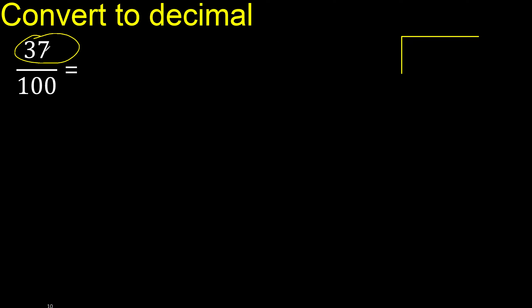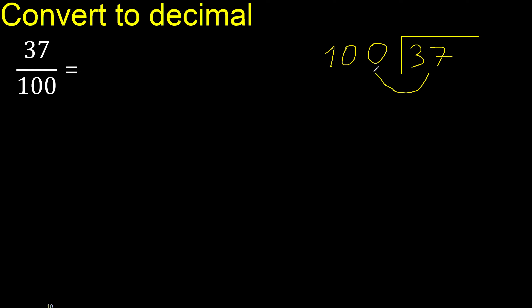37 divided by 100. 37 is less than 100. Therefore complete — always complete with 0. Here: 0 point.